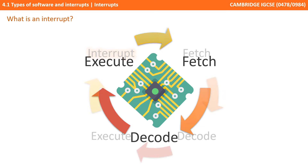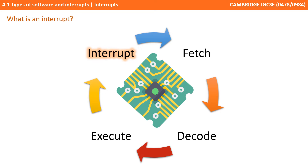We can evolve our understanding of the fetch, decode, execute cycle to include an additional step: fetch, decode, execute, and then check if there are any new interrupts to be handled.